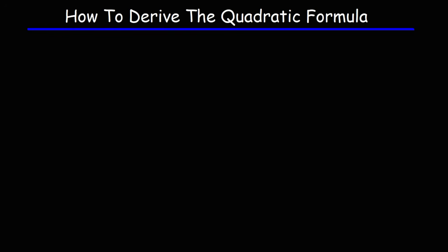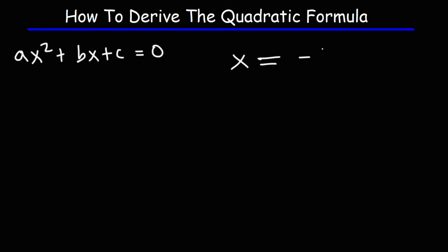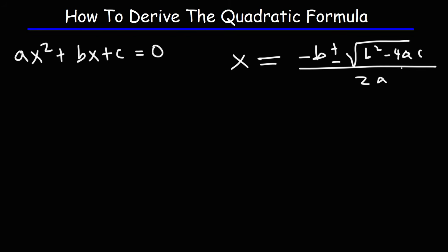In this video we're going to talk about how to derive the quadratic formula starting from the equation ax squared plus bx plus c equals zero. We want to derive x equals negative b plus or minus the square root of b squared minus 4ac, all divided by 2a. In order to derive that formula, we need to solve for x by completing the square.